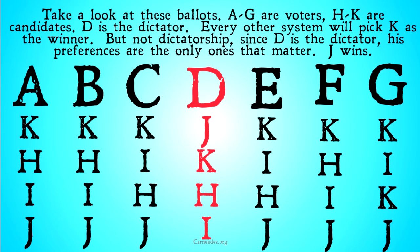D is the dictator. Every single other voting system that we have looked at will pick K as the winner, by far — but not dictatorship. Since D is the dictator, his preferences are the only ones that matter, and J wins. It's interesting to note that every single other system will also rank J as last, and yet dictatorship will rank it as first.